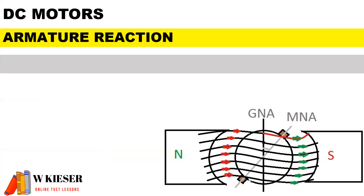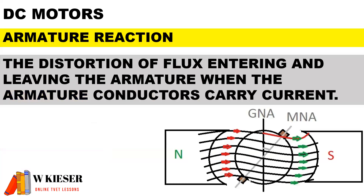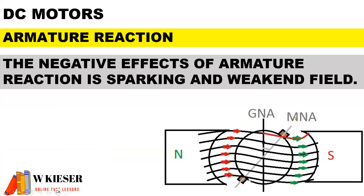For armature action, it is defined as the distortion of flux entering and leaving the armature when the armature conductors carry current. Here you can see the distortion of flux and the axis shifting from the geometric neutral axis to the magnetic neutral axis. The negative effects of armature action are sparking and a weakened field.